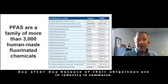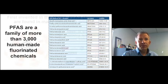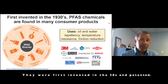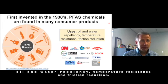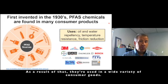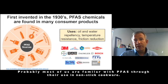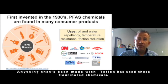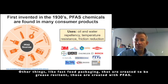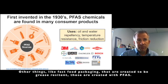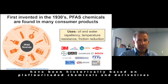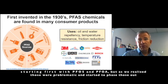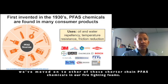There's more that we're discovering day after day because of their ubiquitous use in industry and commerce. PFAS have been around for a long time — they were first invented in the 1930s and patented. They have a lot of favorable characteristics that impart things like oil and water repellency, temperature resistance, and friction reduction. As a result, they're used in a wide variety of consumer goods. Most of us are familiar with PFAS through their use in nonstick cookware — anything made with Teflon has used these fluorinated chemicals. Fast food packaging created to be grease resistant has also been made with PFAS. They also make an excellent fire suppressant, so most firefighting foams have historically been based on perfluorinated chemicals, starting with PFOS and PFOA. As we realized those were problematic and began phasing them out, we've moved to shorter-chain PFAS chemicals in our firefighting foams.